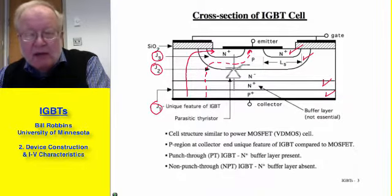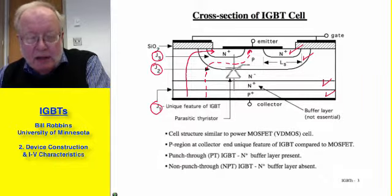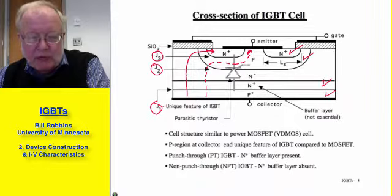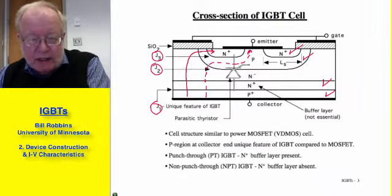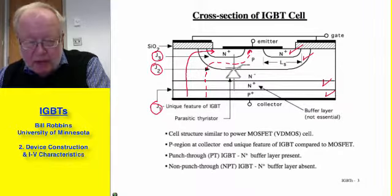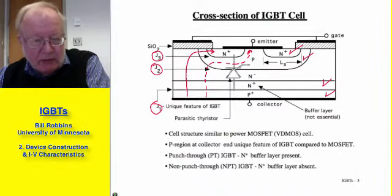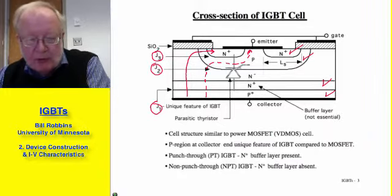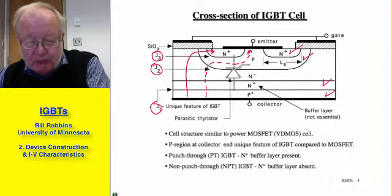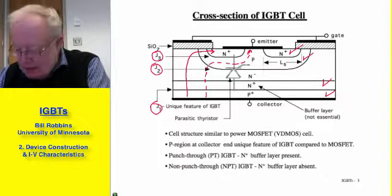We have to be aware of the parasitic thyristor and hopefully avoid ever turning it on, because if it turns on we have no way of turning it off by means of gate control. We would have to rely on the collector going negative with respect to the emitter in order to turn it off. Since IGBTs may be used in a DC-powered circuit — especially a punch-through device with no reverse blocking capability — we would have no way of turning it off, and would probably destroy the device and maybe also damage the converter in which the IGBT is embedded.